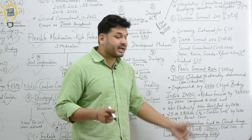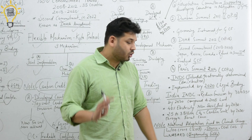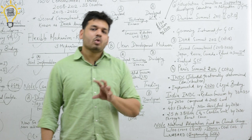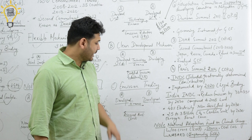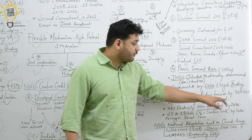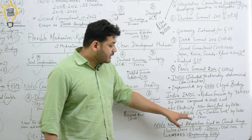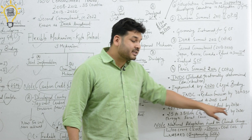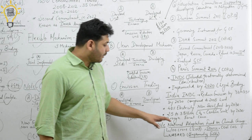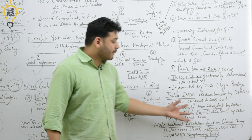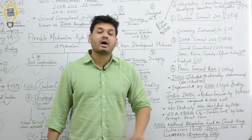India's INDC targets are very important for exams. First target: India will reduce emissions by 33–35% by 2030 compared to 2005 levels. Second target: 40% of India's electricity will be generated from non-fossil fuel sources by 2030. Third target: India will create a carbon sink of 2.523 billion tons of CO2 by 2030 by increasing forest cover, which absorbs CO2 and releases oxygen.